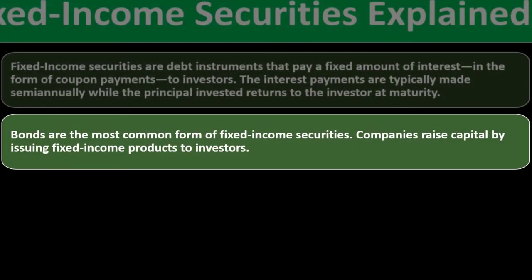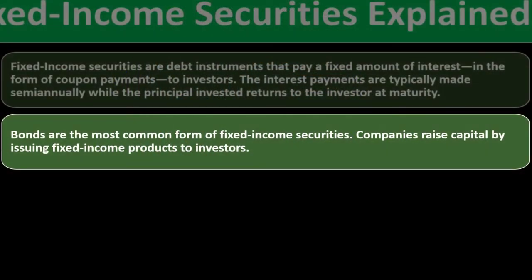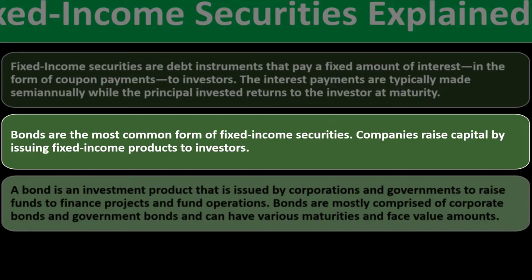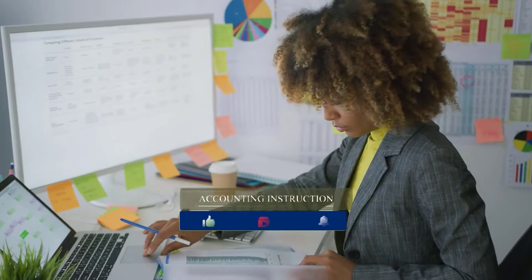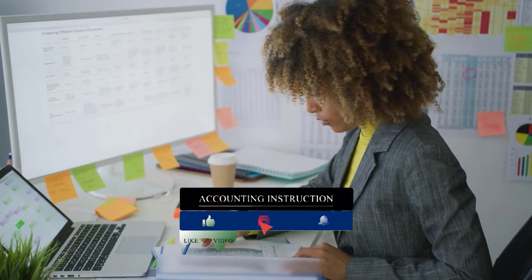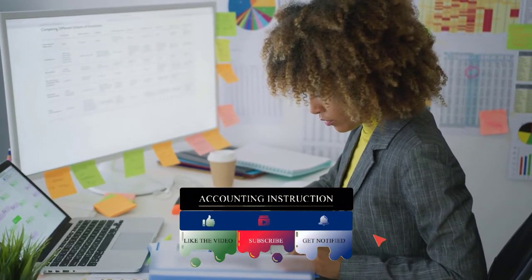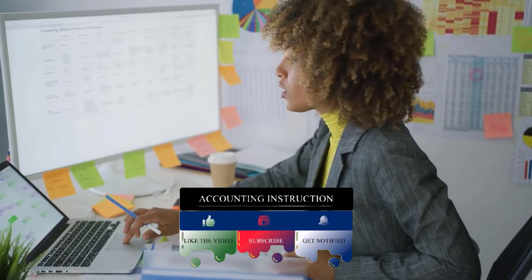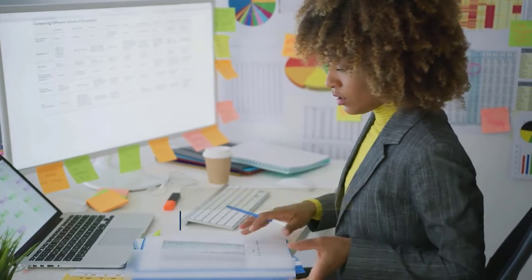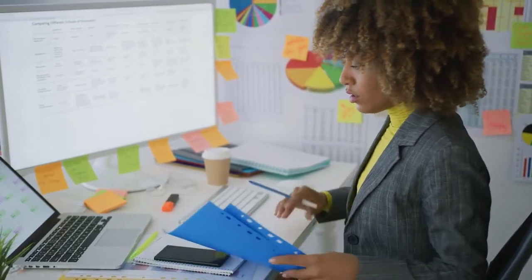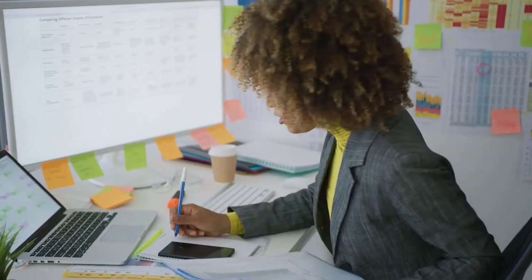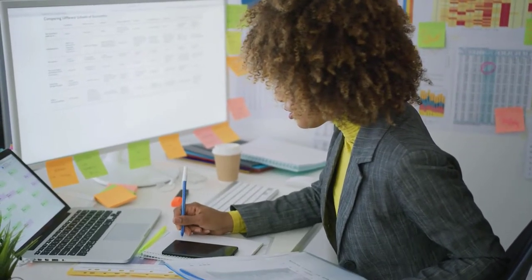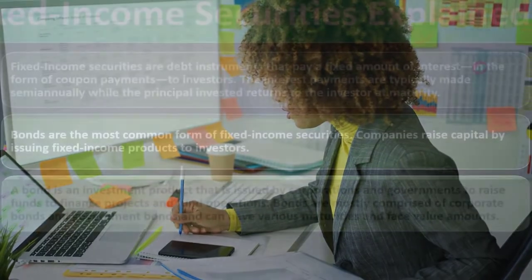Bonds are the most common form of fixed income security — not exactly synonymous, but the first thing that should come to mind. Companies raise capital by issuing fixed income products to investors. When you think of bonds, consider who is issuing them: possibly the government, possibly companies. You then think about the security of the issuer — how likely are they to repay, just as you would assess an individual borrower's creditworthiness.